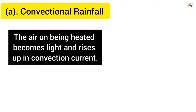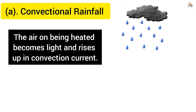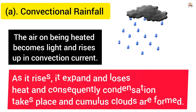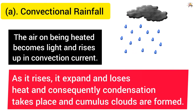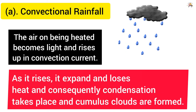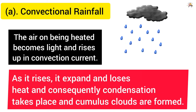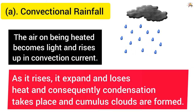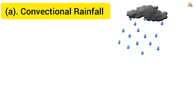The air, on being heated, becomes light and rises up in convection currents. As it rises, it expands and loses heat, and consequently condensation takes place and cumulus clouds are formed.